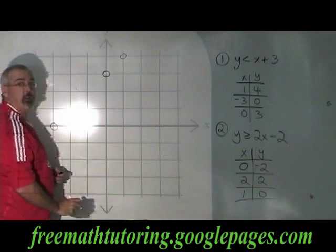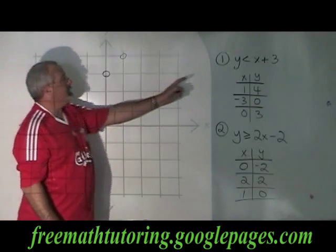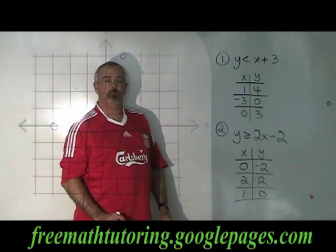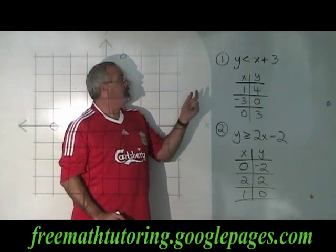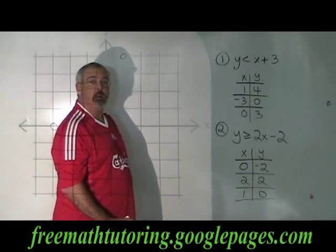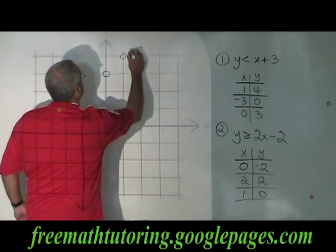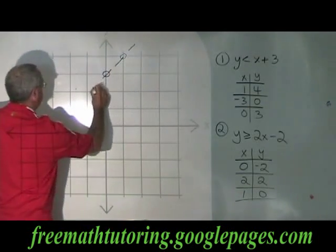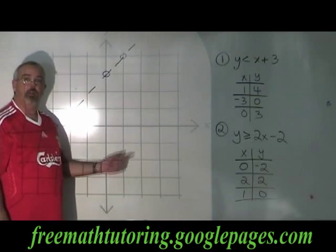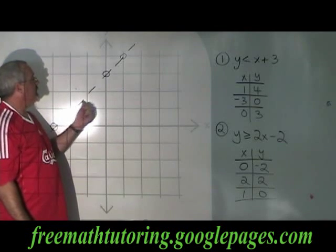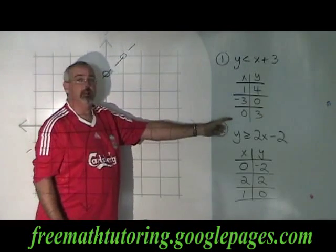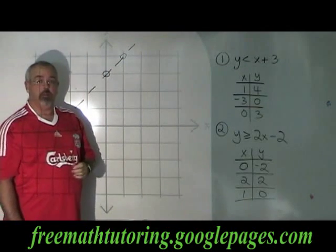All I have to do now is draw my line. I look at the symbol and I see that it is less than — it is not less than or equal to. That means that the points in this table of values are not actually part of the answer. The way we show that is by drawing a dotted line through those points. Draw your line all the way through the graph and make it clear that it's dotted, showing that the points on the line are not part of the answer.